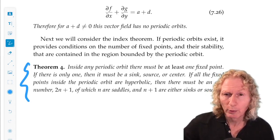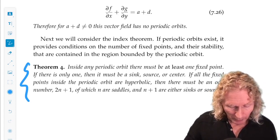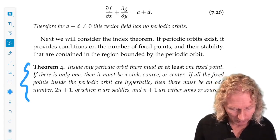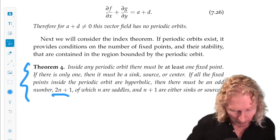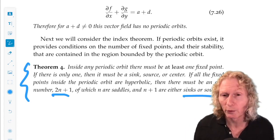If all the fixed points are hyperbolic, can't be a center then, inside the periodic orbit, then there must be an odd number, 2n plus 1, of which n are saddles and n plus 1 are either sinks or sources.